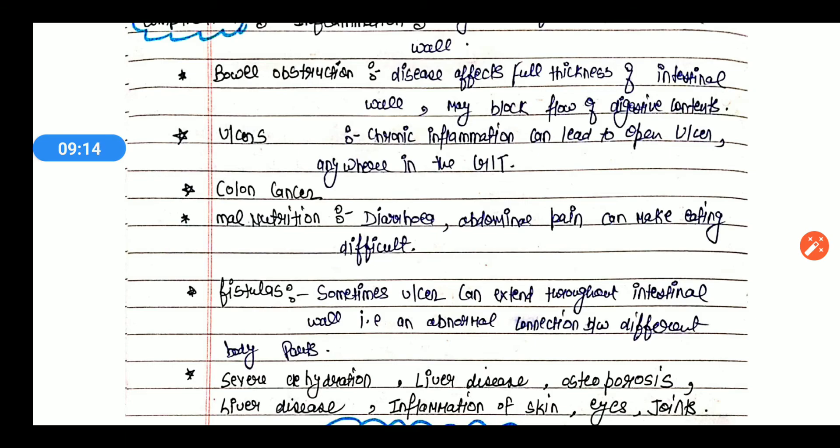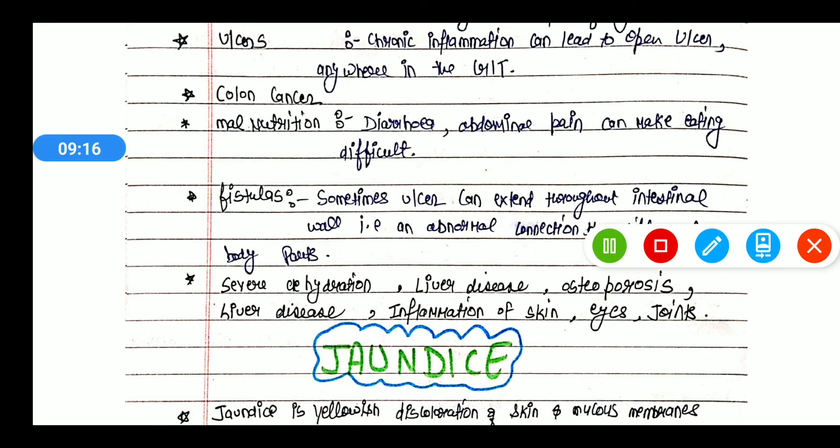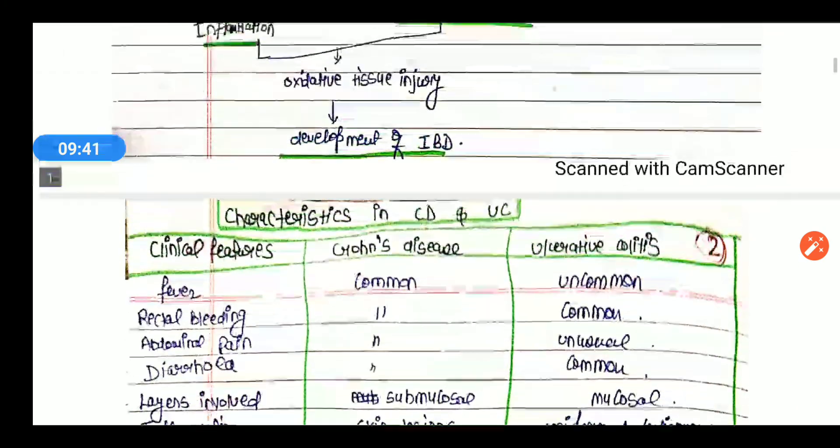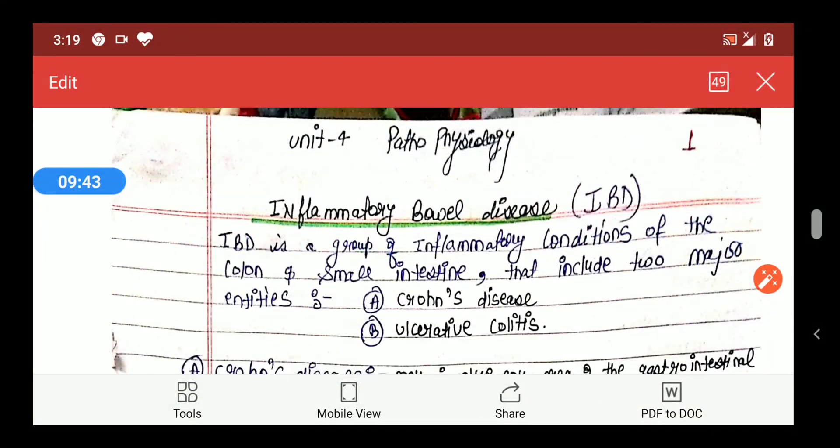Diarrhea with bleeding can lead to IBD and may cause complications. Various other factors are liver disease, osteoporosis meaning bone disorder, inflammation of skin, eye, and joints. If inflammation can spread from the GIT, other parts can be affected like the skin, eyes, and joints. So in all these places it can cause inflammation. So it's all about the IBD, that is inflammatory bowel disease. Thank you.